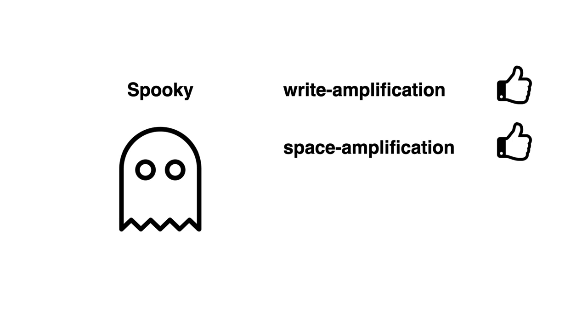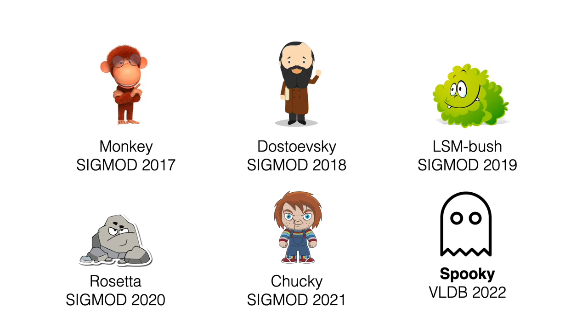So in conclusion, we introduce Spooky, a new method of granulating LSM tree compactions that achieves a better balance between write amplification and space amplification than was ever previously possible. And Spooky is actually just the latest in a series of six recent papers, each of which improves some aspect of LSM trees from its filter policy to its compaction policy. We encourage you to have a look at them. So that's it for now. Thanks very much for your attention.